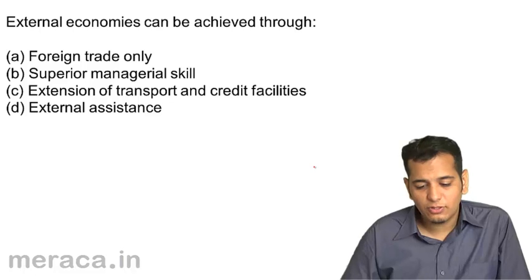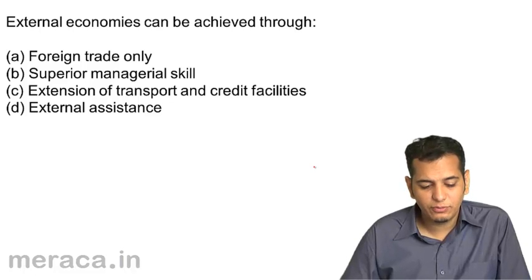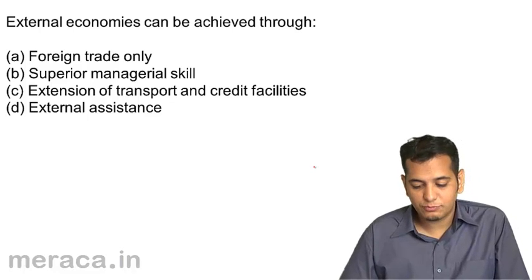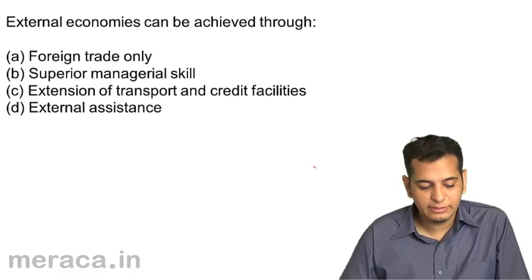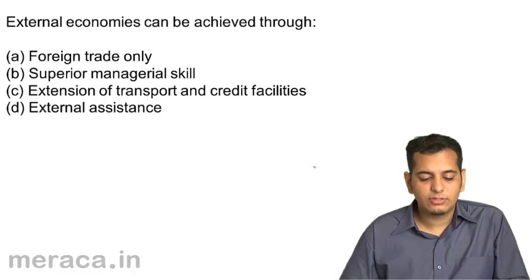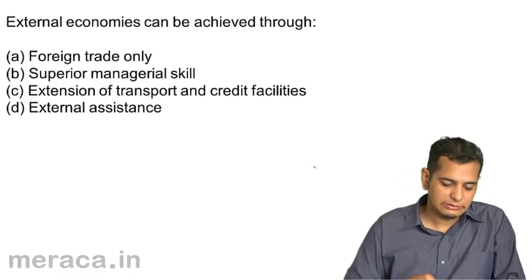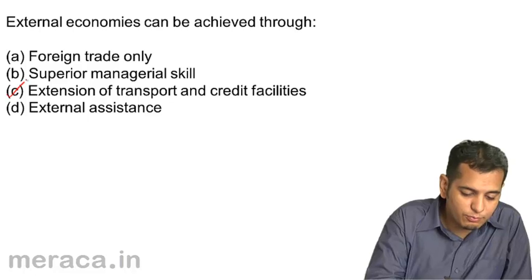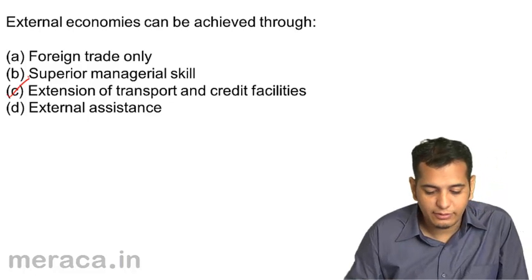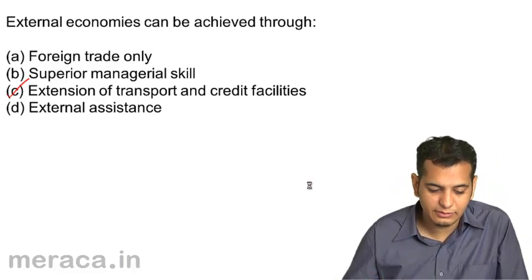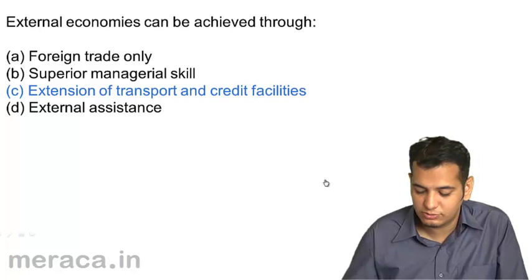External economies can be achieved through: a) foreign trade only, b) superior managerial skill, c) extension of transport and credit facilities, d) external assistance. The answer is extension of transport and credit facilities, which we have already covered.